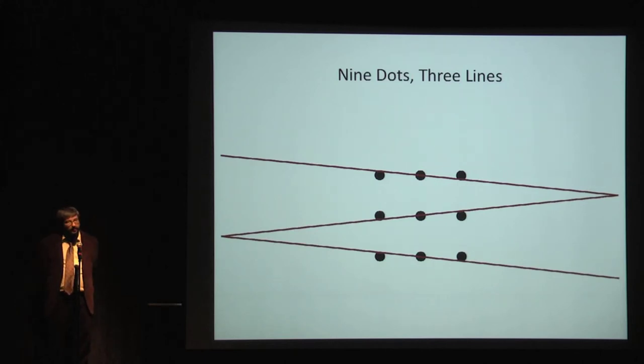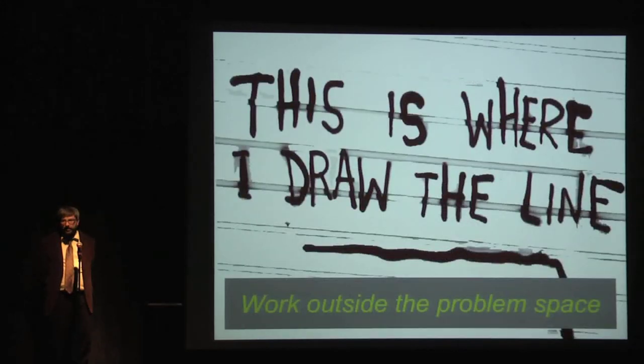Now, the assumption people make here is that these dots are zero dimensional. They don't have any width or height. But in fact, they do. And so you can draw three lines through the nine dots. And so we try to think about how could we have come up with a solution to this? One way is to leave the puzzle space.